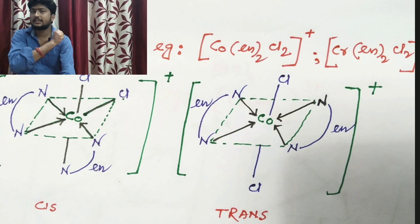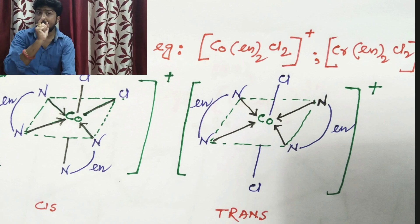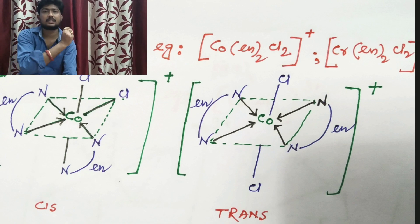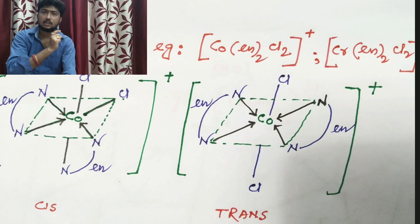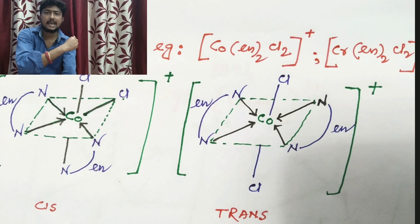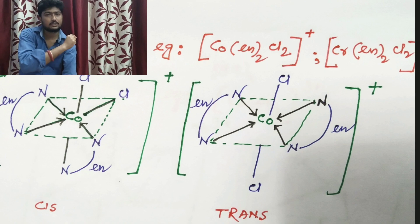In the next example, M is connected to AA2, AA, and B2, where AA is a bidentate ligand like ethylene diamine (NH2-CH2-CH2-CH2-NH2). In this case also, two isomers are possible: one cis and one trans. In the cis isomer, two Cl atoms remain at 90 degrees, and in the trans isomer, two Cl atoms remain at 180 degrees. N is connected to N via an en (ethylene diamine) ligand.